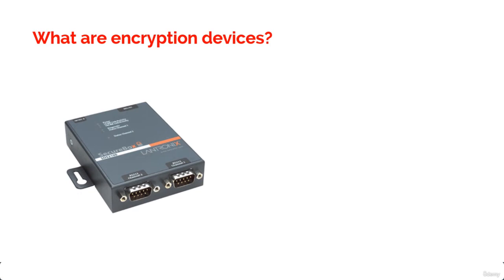Sometimes these devices are called encryption gateways. As you can see on the screen, this is an encryption appliance. They can either sit in-line with a local server, encrypting and decrypting all the traffic, or they can function as an appliance or application server, encrypting any file that is sent to them within a network.